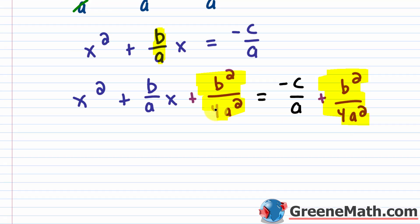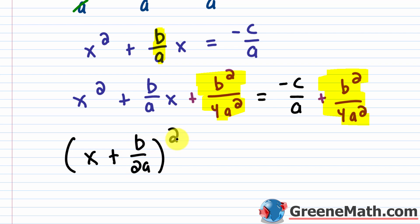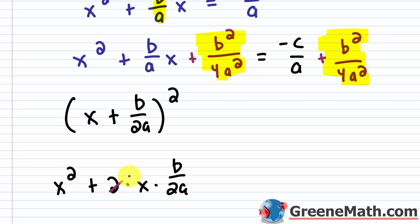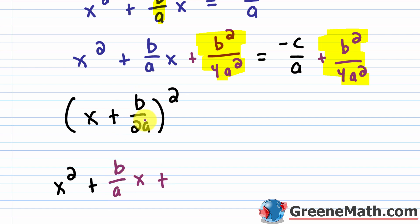Factoring the left side, we use b/a times one-half = b/2a, giving us (x + b/2a)². You can verify this by expanding: first term squared is x², plus 2 times x times b/2a — the 2s cancel leaving (b/a)x — plus (b/2a)² which is b²/4a². That confirms the factorization. Whenever you complete the square, take the coefficient of x to the first power and cut it in half — that's what you use when factoring.